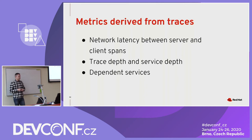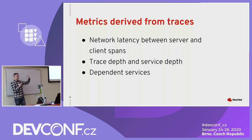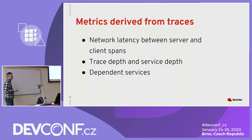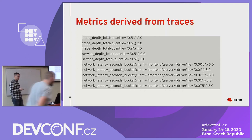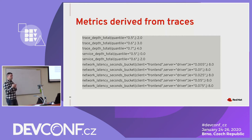Similar to trace depth is service depth — the length of the chain of services calling each other. For example, service A calling B and B calling C gives a depth of two — two edges, two network calls between services. And there are dependent services: how many services depend on your service? These metrics can be exported as Prometheus metrics — Spark Streaming exports a Prometheus endpoint and Prometheus scrapes those metrics.